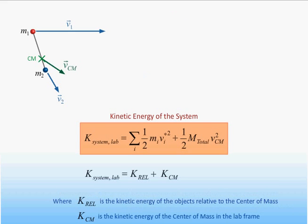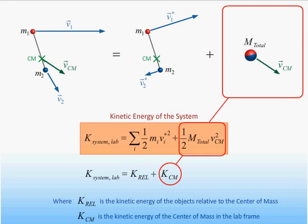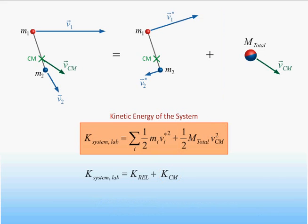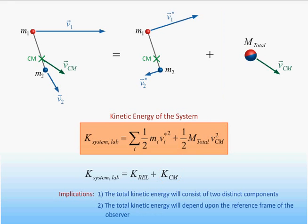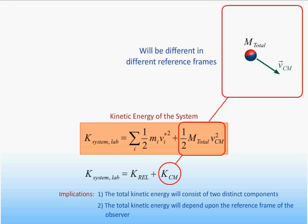The result we derived on the previous slide is completely general. The total kinetic energy of any system of objects as viewed by an observer is simply equal to the total kinetic energy of the objects as viewed in the center of mass reference frame — often called the internal kinetic energy — plus the total kinetic energy of the center of mass in the observer's reference frame — often called the center of mass kinetic energy. This result has two profound implications. First, the total kinetic energy of a system of particles will in general have two distinct components. Second, the kinetic energy of a system of particles does depend on the reference frame of the observer. The relative kinetic energy will be the same for all observers, but the center of mass kinetic energy will be different for different observers, since it depends on the speed of the center of mass in the frame of the observer.